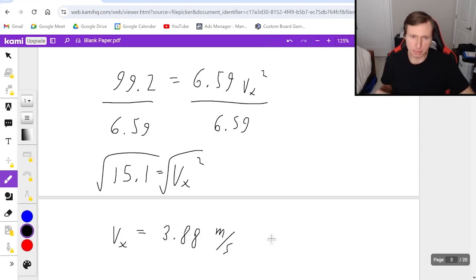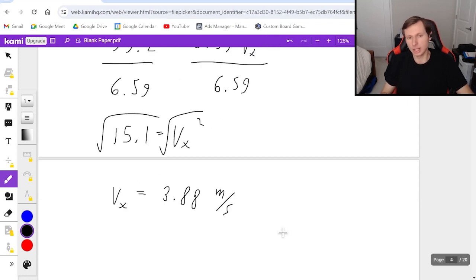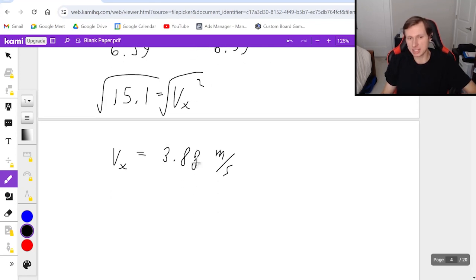That's meters per second. Keep in mind, whenever you take a square root, it's technically plus or minus. However, it makes no sense to include the negative for this one because, I mean, how can you have a negative velocity here? And I would love to say this is the final answer, except of course it's not. And the reason why is I wanted the initial velocity. What we found is just the x component of velocity.